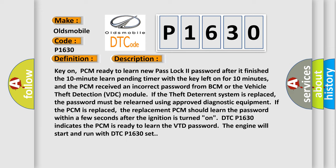The PCM received an incorrect password from BCM or the vehicle theft detection (VTD) module. If the theft deterrent system is replaced, the password must be relearned using approved diagnostic equipment. If the PCM is replaced, the replacement PCM should learn the password within a few seconds after the ignition is turned on. DTC P1630 indicates the PCM is ready to learn the VTD password; the engine will start and run with DTC P1630 set.